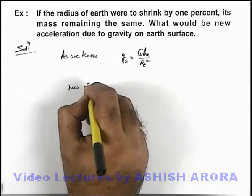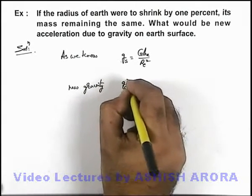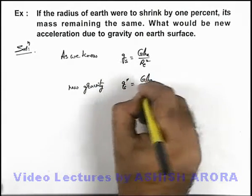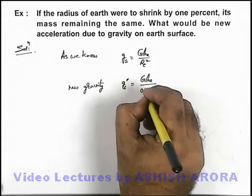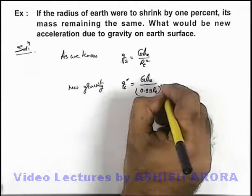g' = GMₑ/(0.99Rₑ)², as it is reduced by 1 percent.